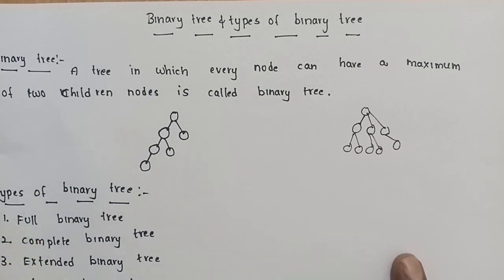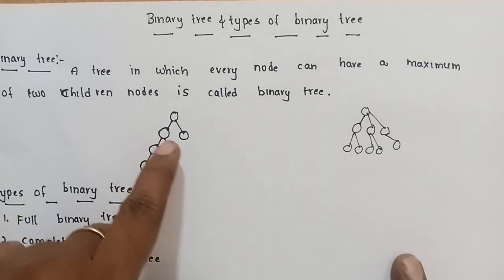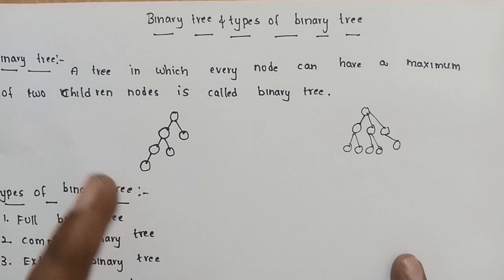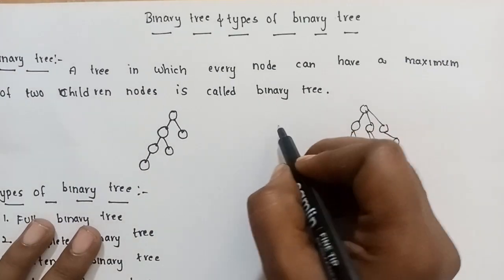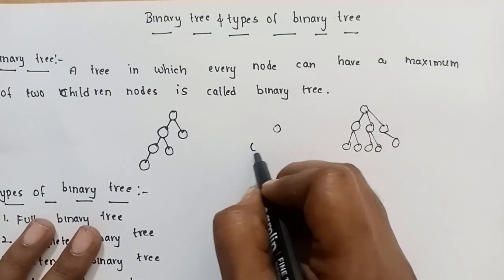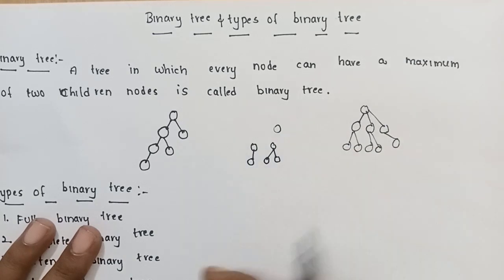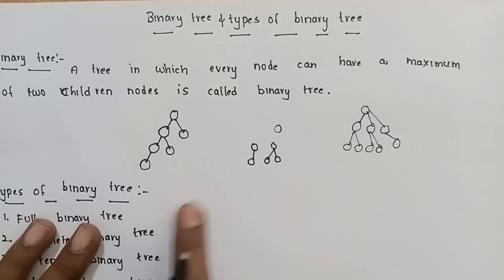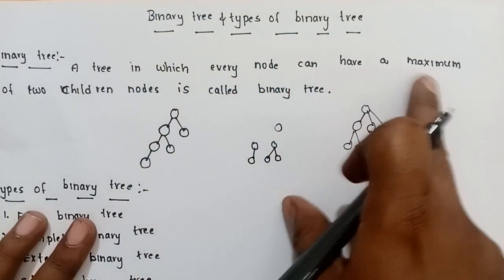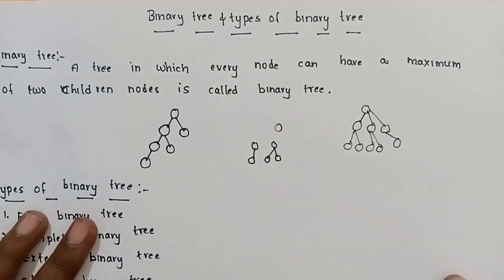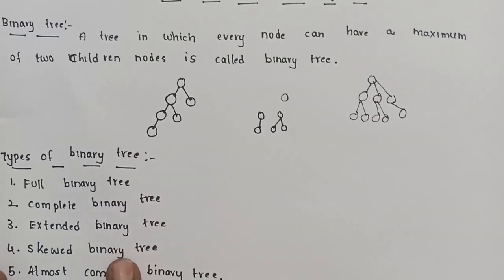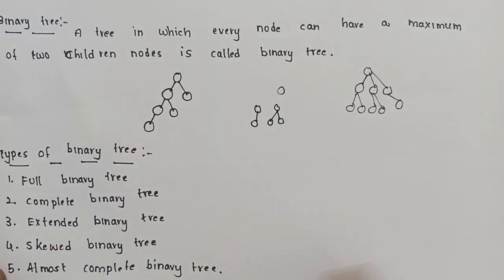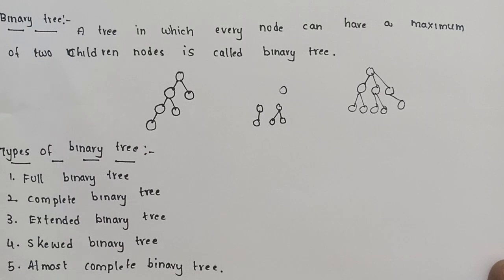A node can have no children, one child, or two children — that is a binary tree. So, a tree in which every node can have a maximum of two children nodes is called a binary tree. That is the definition. Types of a binary tree: Full Binary tree, Complete Binary tree, Extended Binary tree, Skewed Binary tree, and Almost Complete Binary tree.